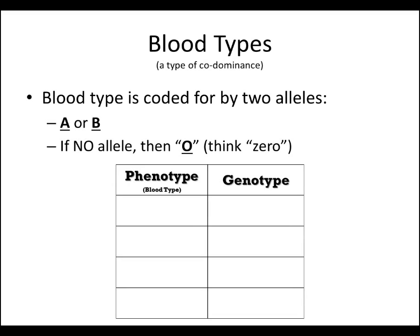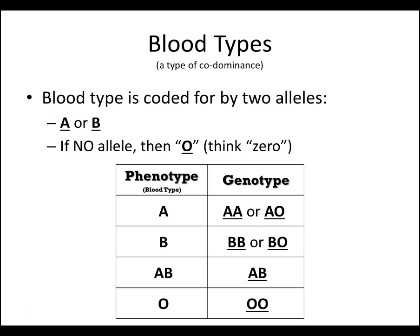You'll want to copy this table down. There are four blood types: A, B, AB, and O. If your blood type is A, your genotype is either AA or AO. If it's blood type B, your genotype is either BB or BO. If your blood type is AB, you only have one possible genotype — you have both A and B. If your blood type is O, then you have two blank alleles — nothing for either.